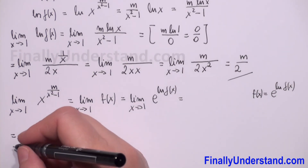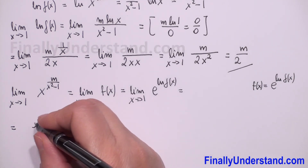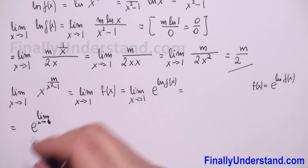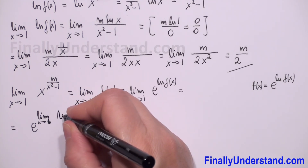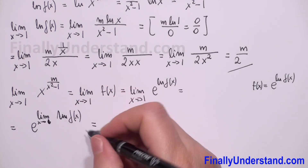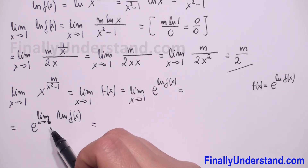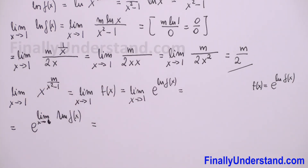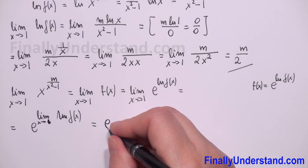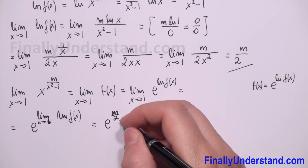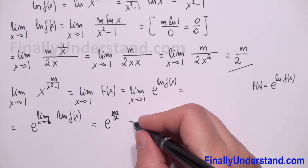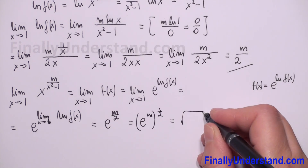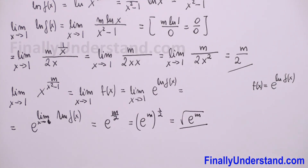From the properties of limits we can rewrite this as e to the power of the limit as x approaches 1 of natural logarithm of f of x, which equals m over 2. So we have e to the power m over 2. We can rewrite this as e to the power m to the power one half, which is the square root of e to the power m. This is the solution.